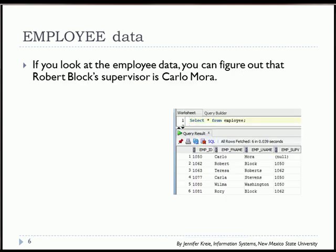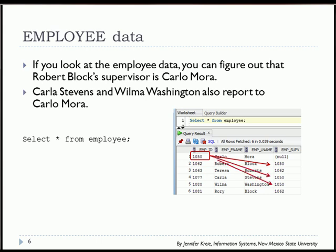If you look at the actual employee data with a SELECT * FROM employee, you'll see that Carlo Mora, whose employee ID is 1050, is a supervisor for Robert Block, and also Carla Stevens and Wilma Washington report to Carlo Mora — we see the 1050 repeated in the supervisor foreign key field.